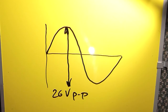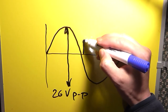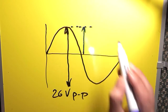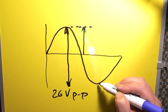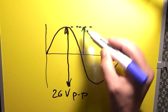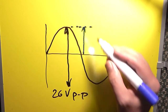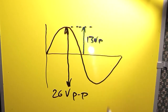When using the calculation, we'll often use the peak voltage, which is either from the zero line to the peak, or from the zero line to the negative peak. So if it was 26 volt peak to peak, that would make it 13 volt peak.